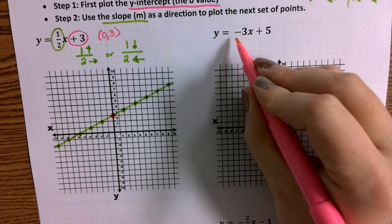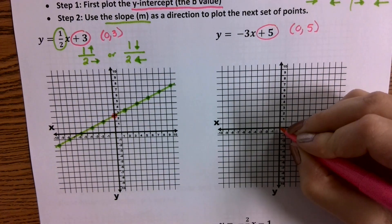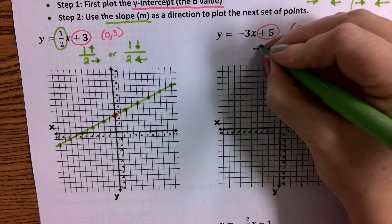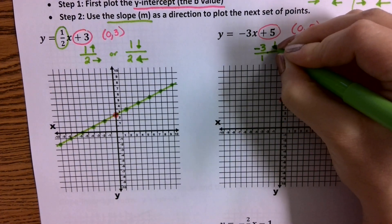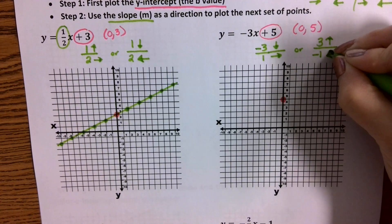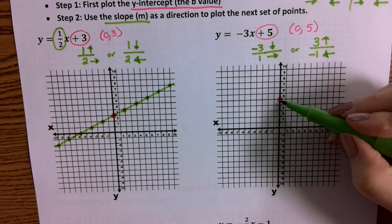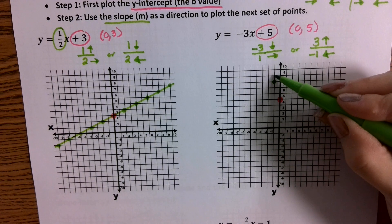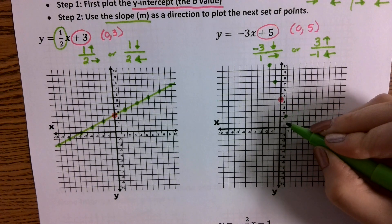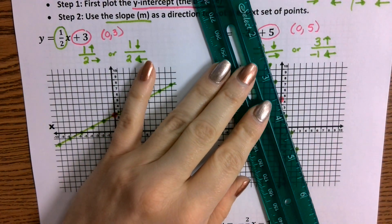Let's do one more together. We have y = -3x + 5. That plus 5 is my y-intercept, so I'm going to graph the first point at (0, 5). Then I use the slope, which is negative 3 — that could be -3 over 1, meaning I go down 3 and then to the right, or positive 3 over -1 meaning I go up 3 and then to the left. I can go up 3 to the left 1, up 3 to the left 1, or down 3 to the right 1, down 3 to the right 1. Then I'll connect them.